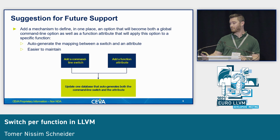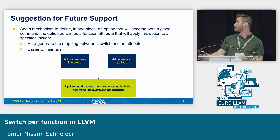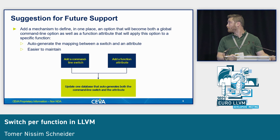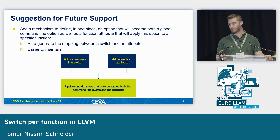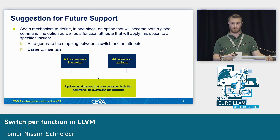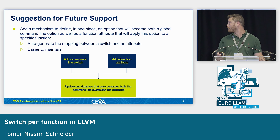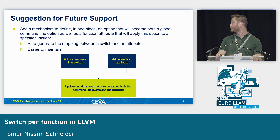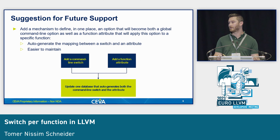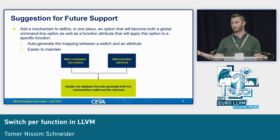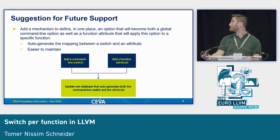As a suggestion for future support: in the previous work, we found the connection between the switch and the attribute. To make it easier to maintain, we want to suggest a single database where you add a switch and it automatically generates both the switch and the attribute, along with the mapping between them. That way, you only need to modify the LLVM source code in one place, rather than separately adding a switch, an attribute, and a map in three different places.